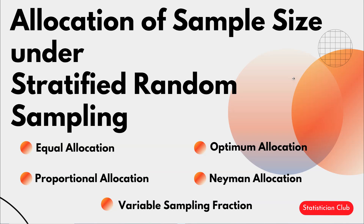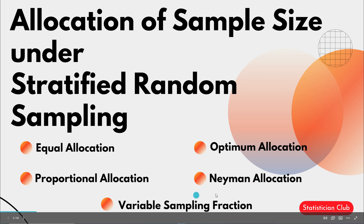In this video I explain allocation of sample size under stratified random sampling. As you know, when we have a population of heterogeneous units, we apply stratified random sampling — we divide our population into homogeneous groups called strata. To allocate sample size to different strata, we use the following methods: equal allocation, optimum allocation, proportional allocation, Neyman allocation, and variable sampling fraction.